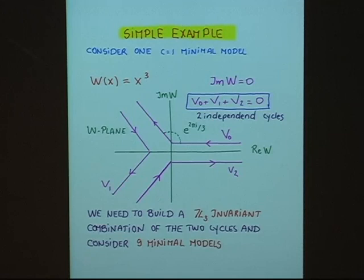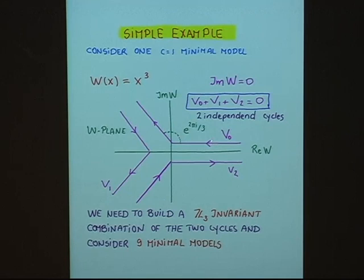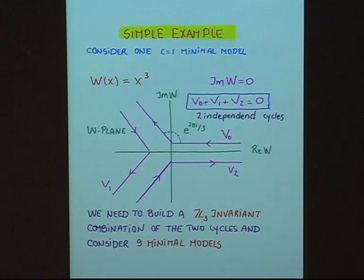Let me look at a simple example to illustrate how a supersymmetric cycle looks. Consider one minimal model where W(x) = x³. The lines giving imaginary part of W equal to zero are three cycles B₀, B₁, B₂ with the angle between them being 2π/3. The sum of the three cycles is equal to zero, so all three cycles are not independent — just two of them are independent. What we need to do is build all possible Z₃-invariant combinations of these two cycles, and consider nine minimal models instead of one.